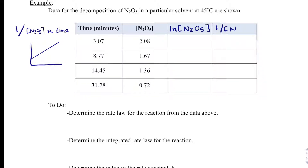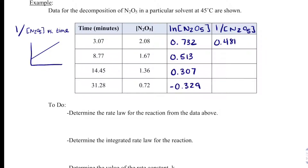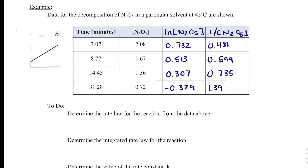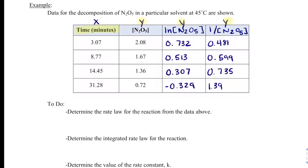What we need to calculate for each data row is the natural log of the concentration and then 1 divided by the concentration. If you're following along, pause the video to solve these. I'll add in the calculated values using my calculator.